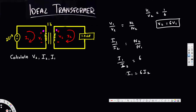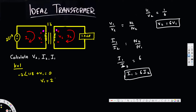Now we have these two relationships. To solve the problem, we apply Kirchhoff's Voltage Law for the first loop. We have a voltage source, and applying KVL gives us: the source voltage minus v1 equals zero, so v1 equals 2∠118°.